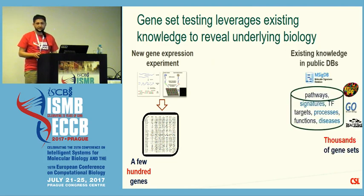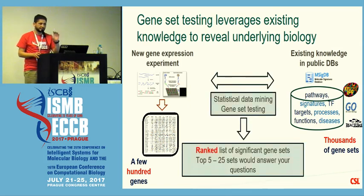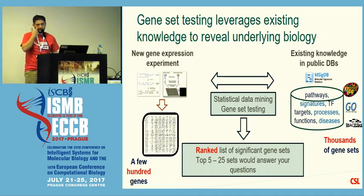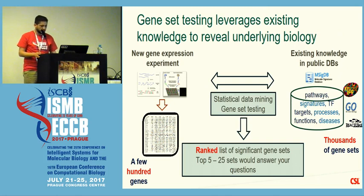We have large databases of pathways, signatures, transcription factor targets, biological processes, functions, and diseases, and these databases are growing exponentially every year. Gene set testing methods basically try to mine these databases and find relevant gene sets — in other words, processes or functions that can describe your experiment. You hope to end up with around 5 to 25 gene sets that can tell you something about your new biology.